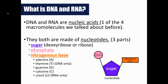Just a reminder from unit one, when we talked about macromolecules, DNA and RNA are both what we call nucleic acids. So when we talked about the four macromolecules — carbohydrates, lipids, proteins, and nucleic acids — we went more in-depth with proteins, lipids, and carbohydrates, and I told you that we would come back and spend an entire unit talking about nucleic acids. And so here we are.